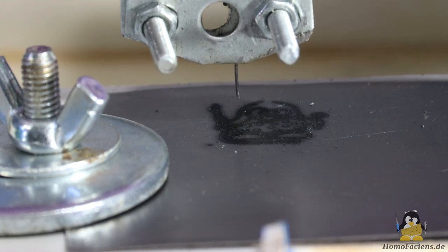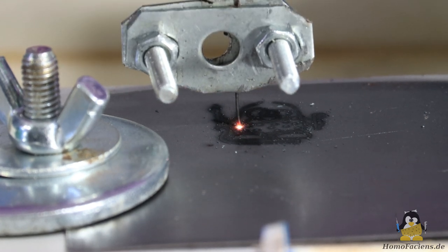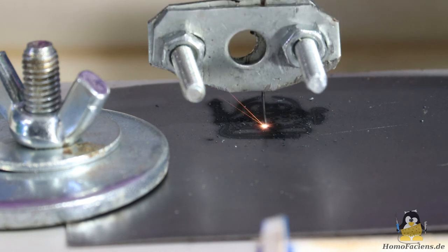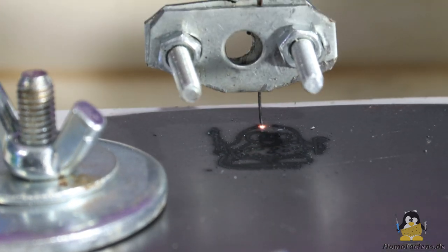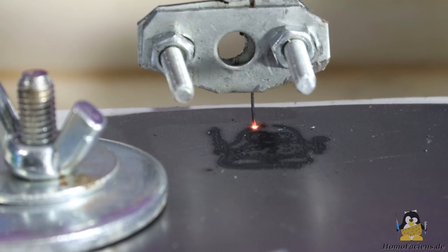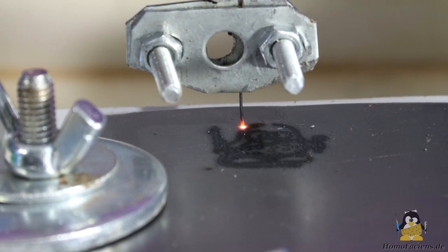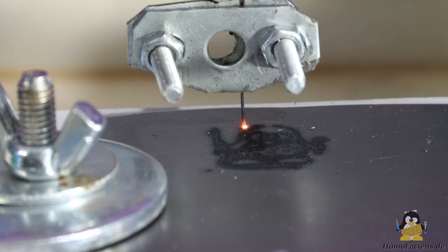In previous videos I'd shown that the material combination of steel and steel tends to weld together. This experiment shows that the vertical movement of the second version of my Wagner hammer appears to be powerful and fast enough to prevent this welding.